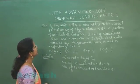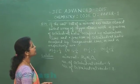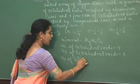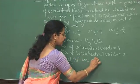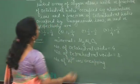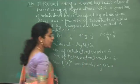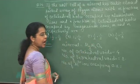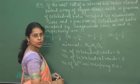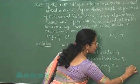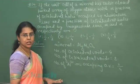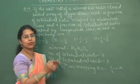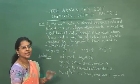In this question, M fraction of octahedral holes is occupied by aluminium ions. According to the formula MgAl₂O₄, two aluminium ions are present per unit cell and these aluminium ions occupy octahedral voids. So out of 4 voids, 2 voids are occupied by aluminium ions. This fraction is 2/4, which is marked as M. So the value of M is 2/4, that is 1/2.